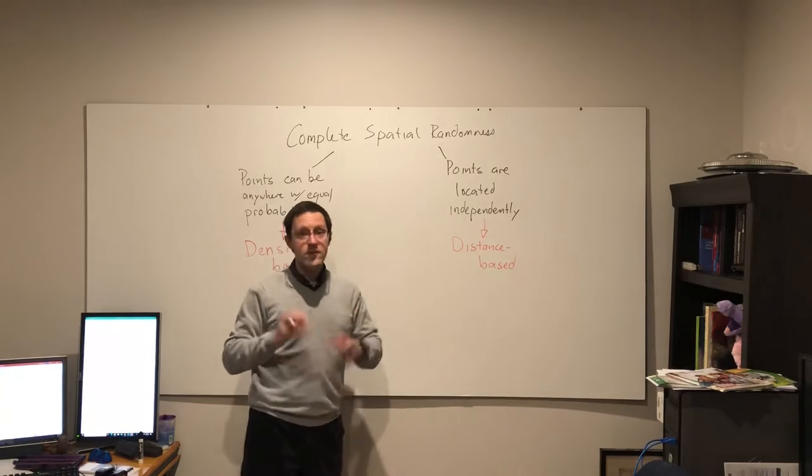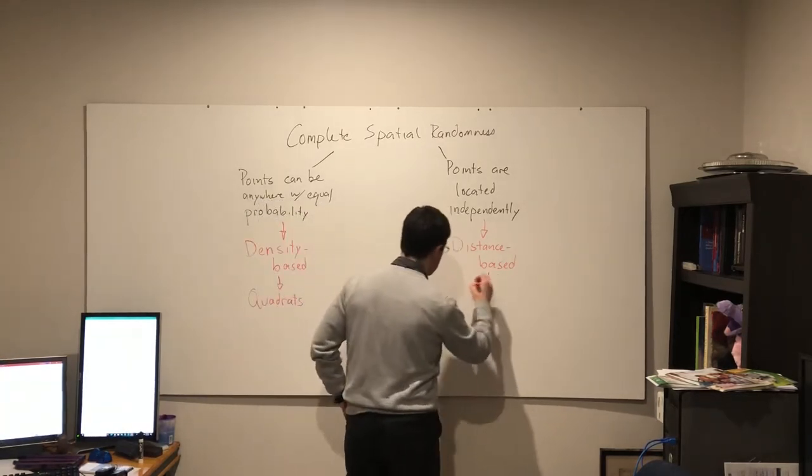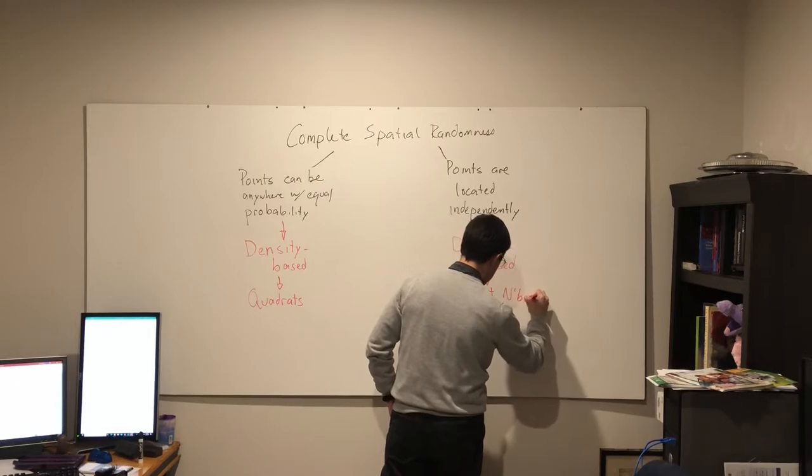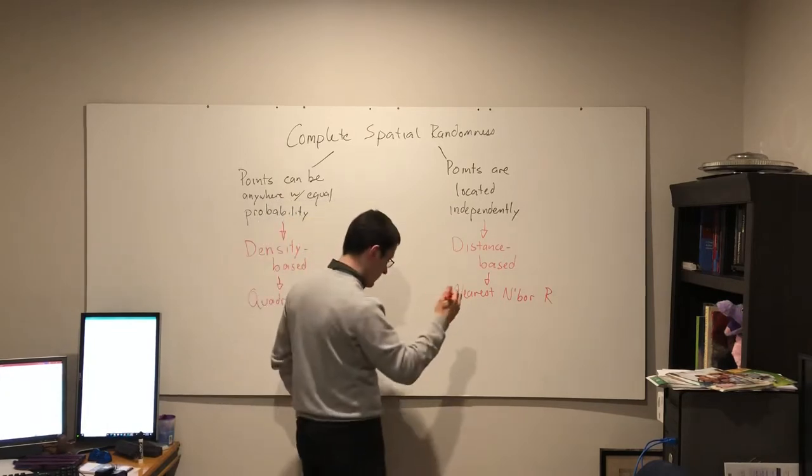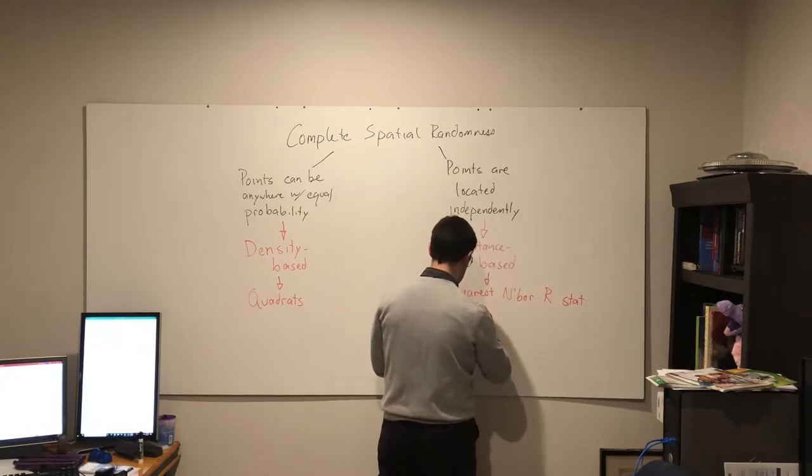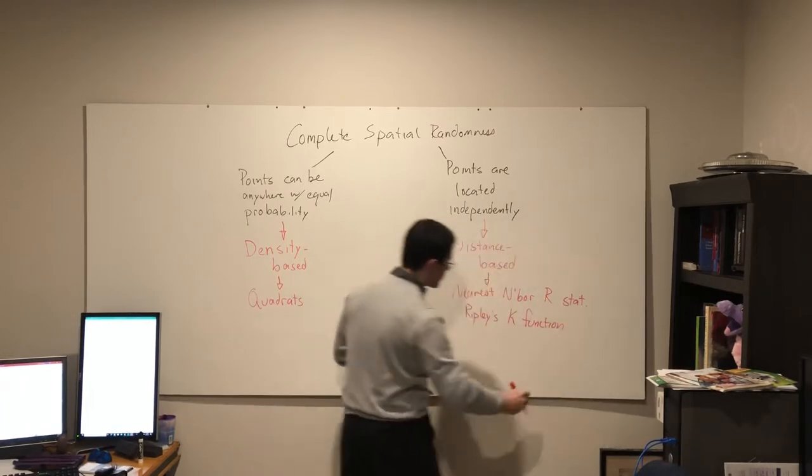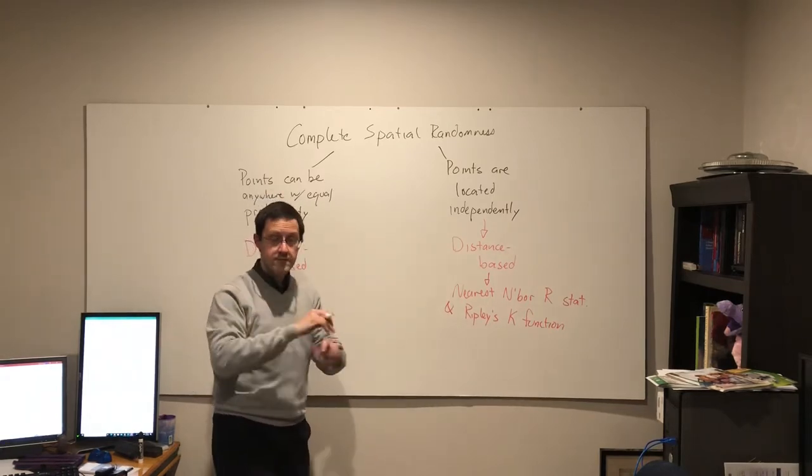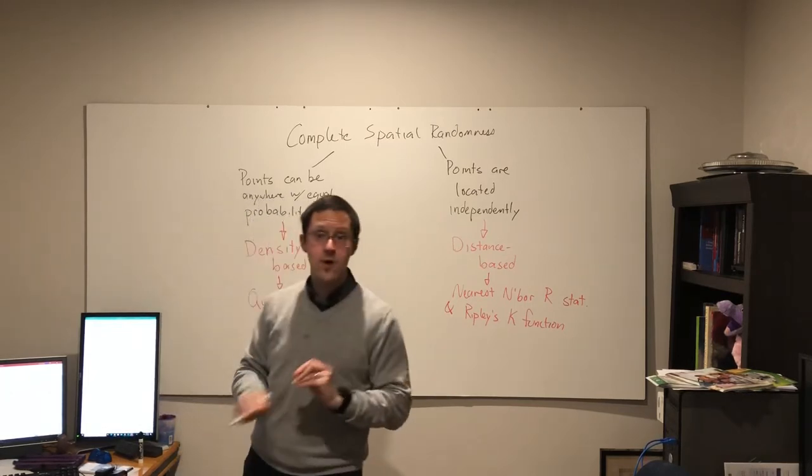Now we're focusing on distance based approaches and we'll see two of them: the nearest neighbor R statistic and Ripley's K function. So now let's switch over and look at these two, starting with the nearest neighbor R statistic.